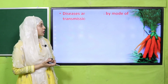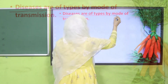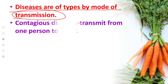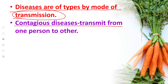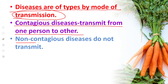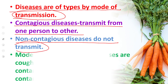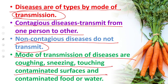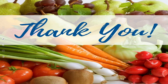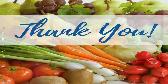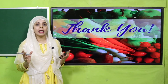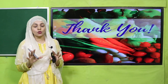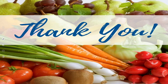Wrap-up: today we learned that diseases are categorized by their mode of transmission. Contagious diseases transmit from one person to another, while non-contagious diseases do not. Modes of transmission include coughing, sneezing, touching contaminated surfaces, and consuming contaminated food or water. Keep everybody around you safe — wash your hands frequently, wear a mask, and if you are ill, see a doctor and stay at home. Have a good day, thank you so much.